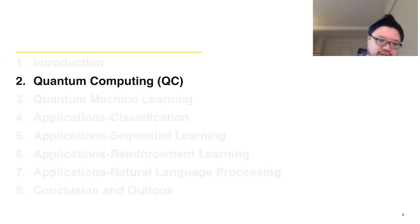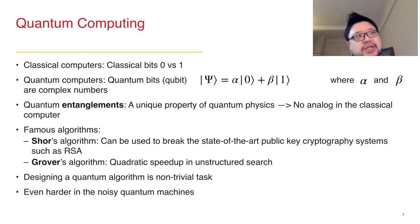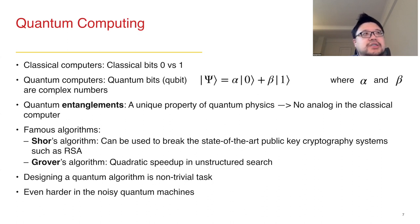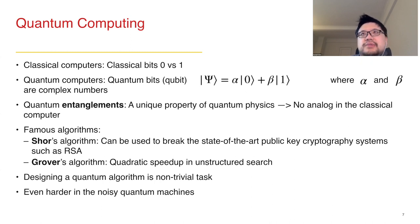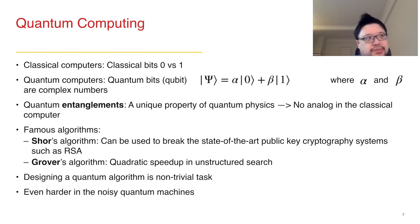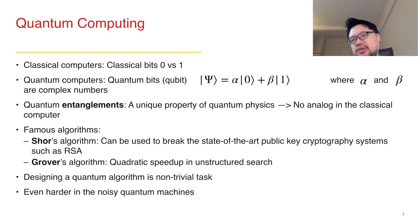Let's start from some quantum computing basics. As you may know, classical computers use classical bits, and each bit can only store zero or one. However, in quantum computers, the basic memory storage unit is called a quantum bit or qubit. For each qubit, we can store a linear superposition of state zero and one simultaneously, up to complex amplitudes alpha and beta. Another very important concept in quantum computing is quantum entanglement, a very unique property in quantum physics with no analog in classical computing.